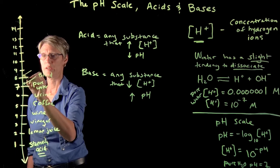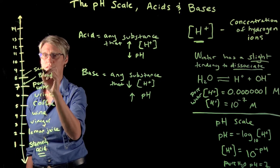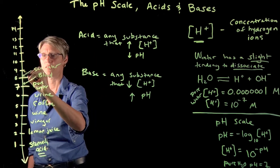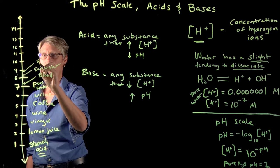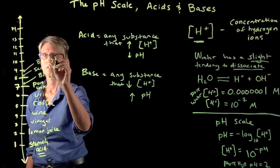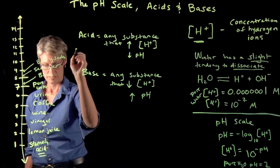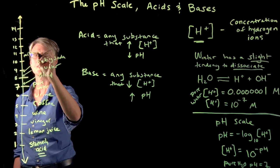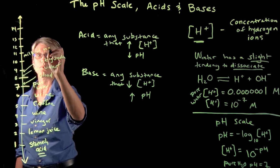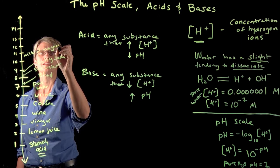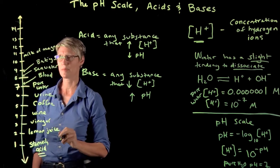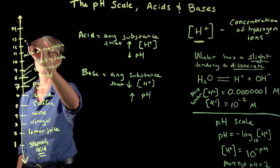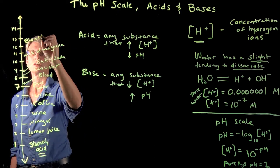Human blood is just a tiny bit more basic than pure water, around 7.4. Seawater is a little bit over 8. Baking soda is around 9. Milk of magnesia is an old-fashioned substance people would take to soothe an upset stomach—it neutralizes stomach acid. Way up here we've got bleach and oven cleaner around 13-14.